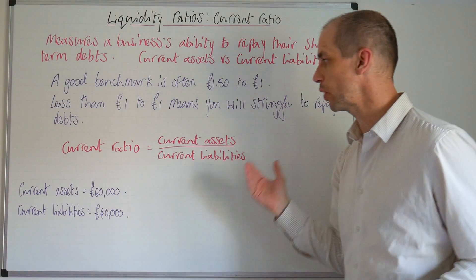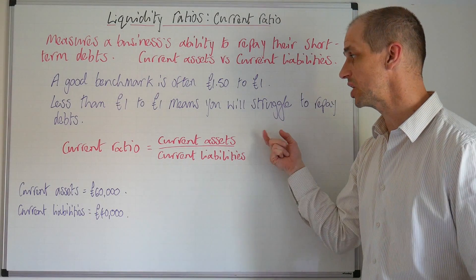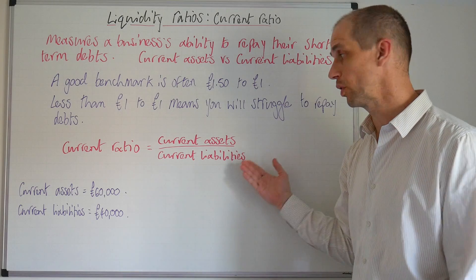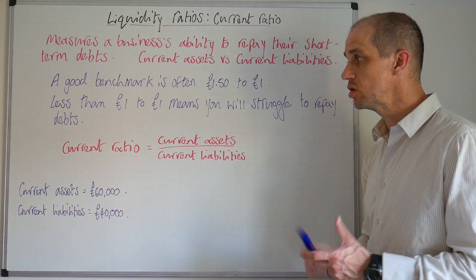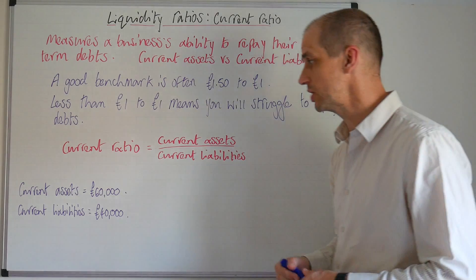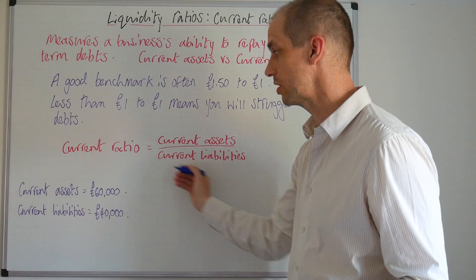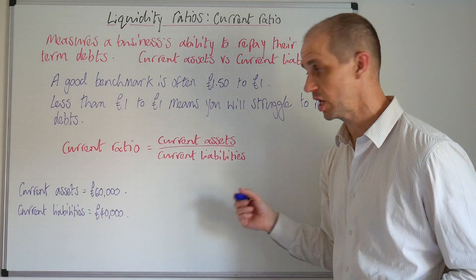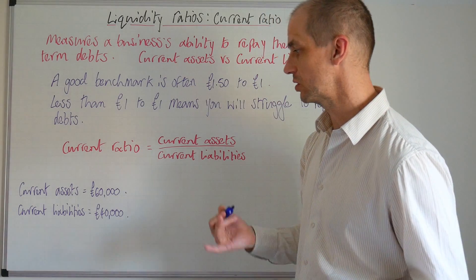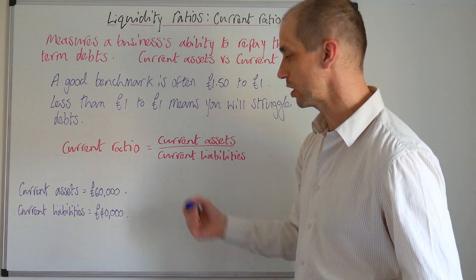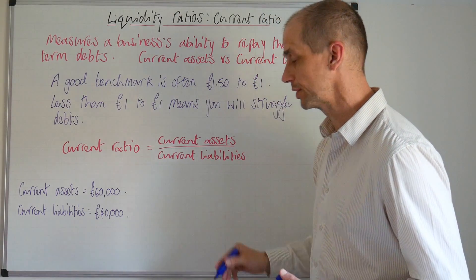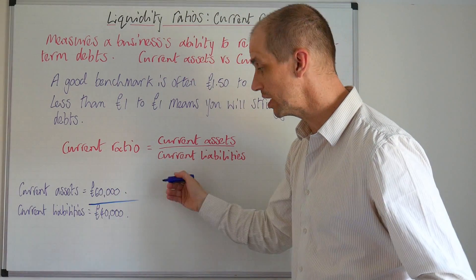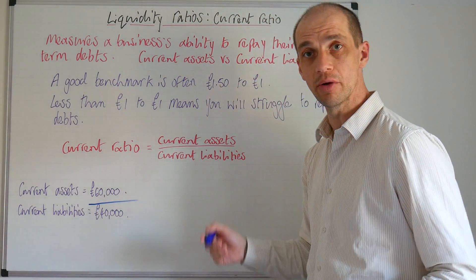When it comes to the actual current ratio calculation, it's simply current assets divided by current liabilities — a nice straightforward calculation to conduct. For example, where you have £60,000 of current assets and £40,000 of current liabilities, dividing one by the other gives you the ratio.